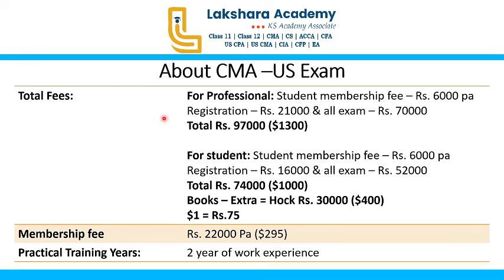The total fee is structured differently for professionals and students. For professionals, the total fee would be around 97,000 rupees, and for students — if you are currently enrolled in a college or university at PG level — the total fee would be 74,000 rupees. This does not include books or coaching classes. Books, for example from HOCK, come to around 30,000 rupees separately, with the assumption of one dollar equals 75 rupees. Put together, the total cost including books would be somewhere between 1 lakh to 1 lakh 30,000 rupees, whether you are a student or a professional.